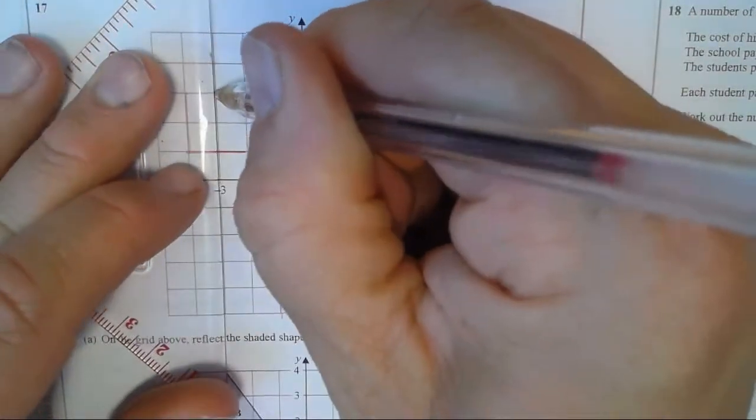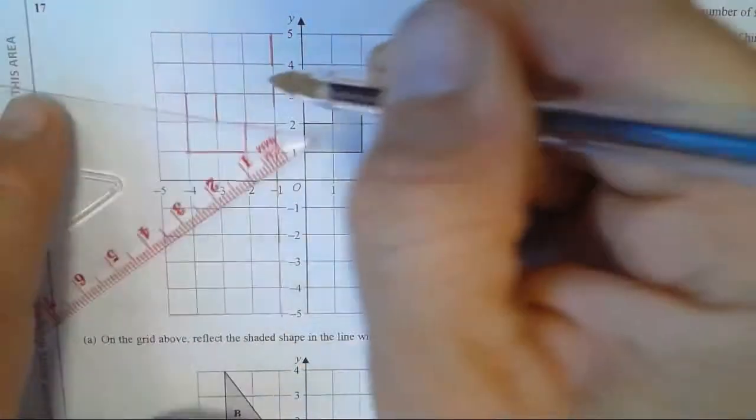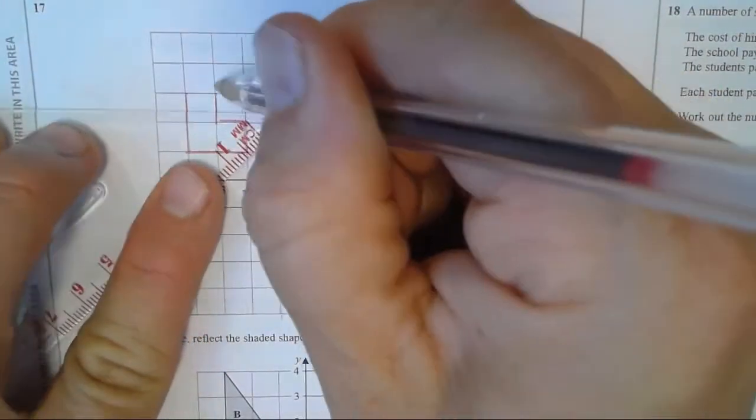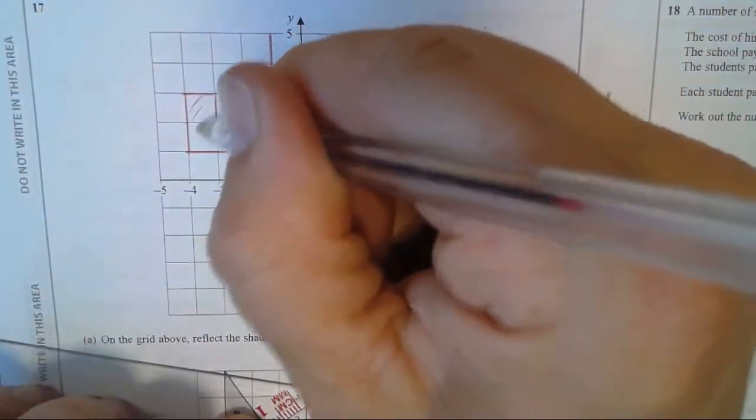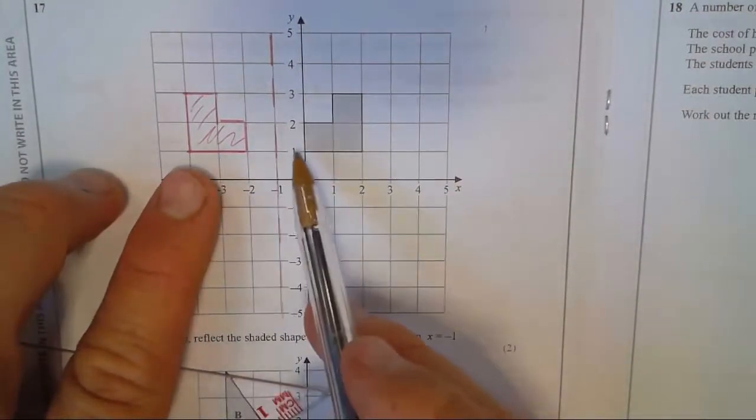It needs to be the same distance this side of this line of symmetry.